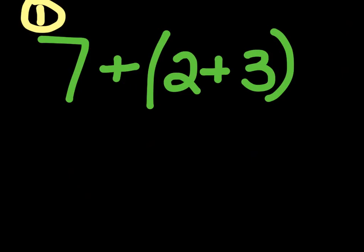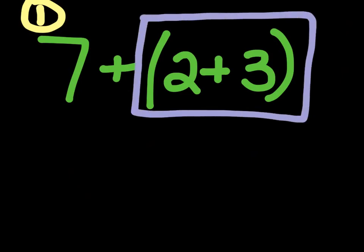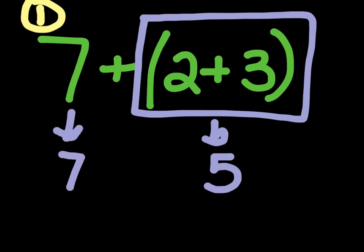Alright, so question number 1 is 7 plus, inside the parentheses, 2 plus 3, close parentheses. So we know from our previous rules that we have to do whatever is inside of the parentheses, and inside the parentheses we have 2 plus 3. 2 plus 3 is 5, so we bring down a 5. The 7 is going to stay as a 7, so the 7 comes down. And we have to bring down the addition symbol also, so the plus goes here. So we know that 7 plus 5 is 12.